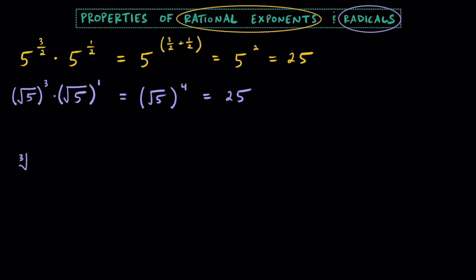For this next one, let's take a look at the radicals first and then the exponential second. So we have the cube root of 16 multiplied by the cube root of 4. Keeping these in radical form, since they're both cube roots, what we can do is multiply these values on the inside together, and 16 times 4 is equal to 64. Now at this point you want to think to yourself what multiplies by itself 3 times to get 64, and that value happens to be 4, since 4 times 4 times 4 is 64.